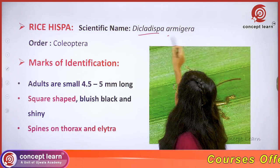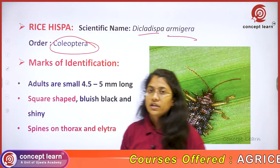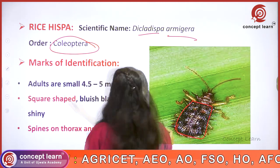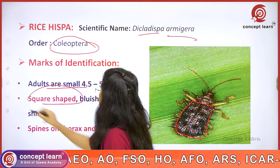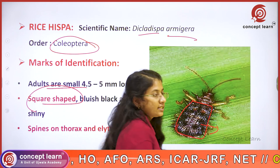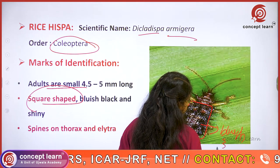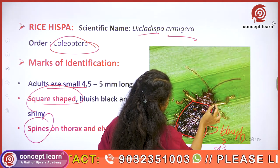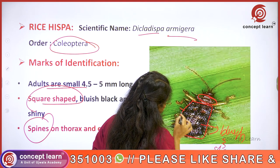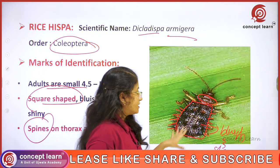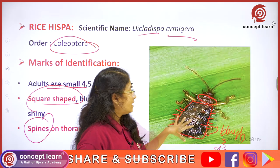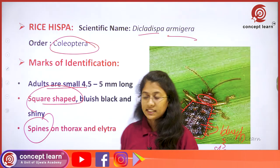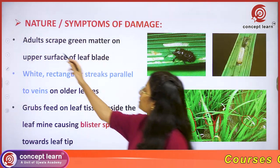The next pest is the rice hispa, known as Dicladispa armigera, which belongs to the order Coleoptera. The adult is very small and square-shaped, bluish-black in color and shiny in appearance. It can be easily identified by the many spines present on its thoracic region and upon its elytra.